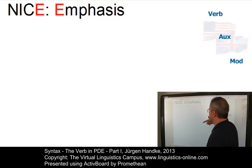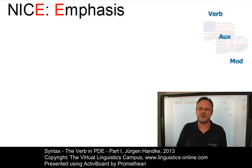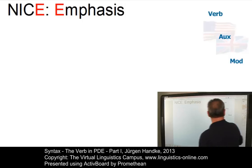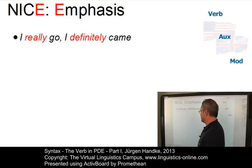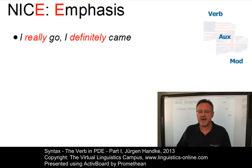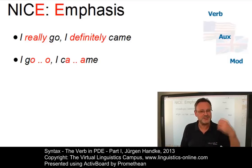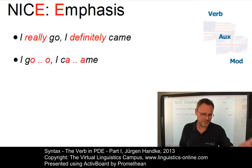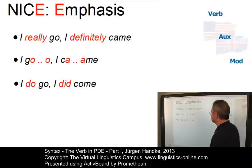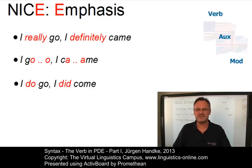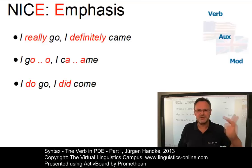The final context is denoted with the letter E — the emphasis context. In order to emphasize another verb or the state or action denoted by it, several strategies are available. For example, we could use adverbs: instead of 'I go', we could say 'I really go' or 'I definitely came'. We could also use intonation. However, a more common technique is the use of an auxiliary verb: 'I do go', 'I did come'. Thus, emphasis is another central property of auxiliary verbs. And so the NICE criteria — negation, inversion, coding, and emphasis — distinguish auxiliary verbs from lexical verbs.